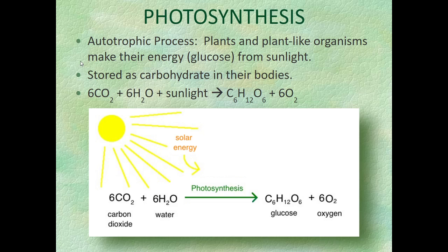I don't like the term 'make' because it implies you take sunlight and create glucose from nothing — that's not what happens. What happens is the things that glucose is made of are already there: water and carbon dioxide. Plants take the energy from sunlight and use it to rearrange those atoms into new molecules. It's kind of like Legos — carbon dioxide is a Lego made up of three little pieces: a carbon and two oxygens.